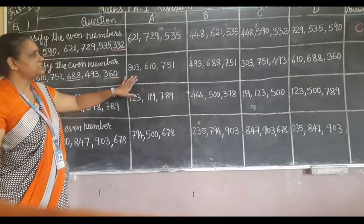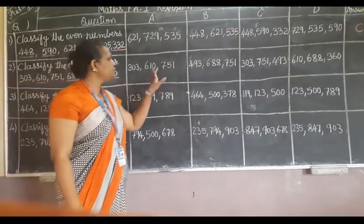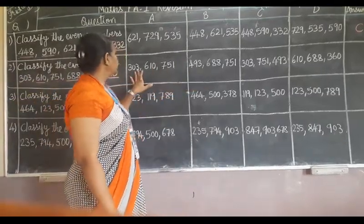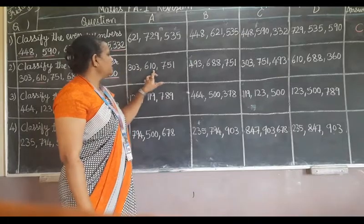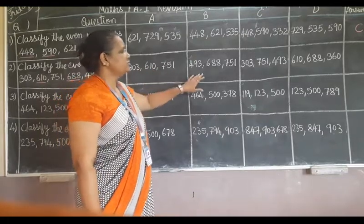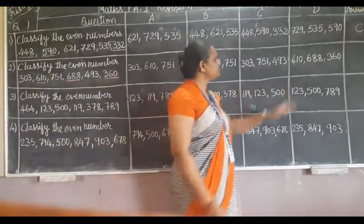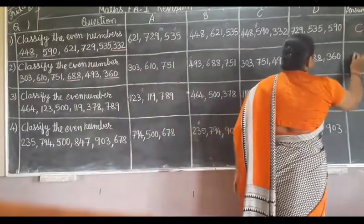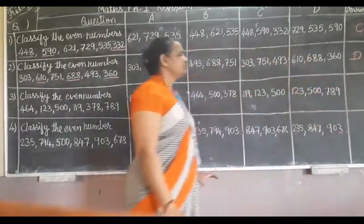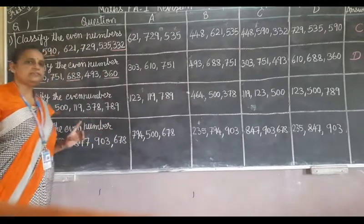In this, which one is the right one? Odd is given here, even is also given, and odd is also given. D option is the right one — D has all even numbers.